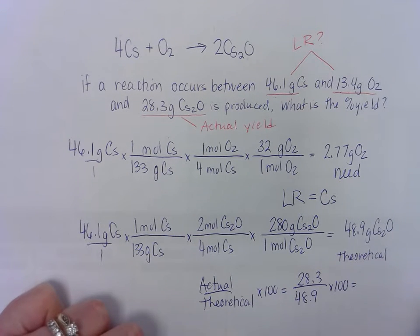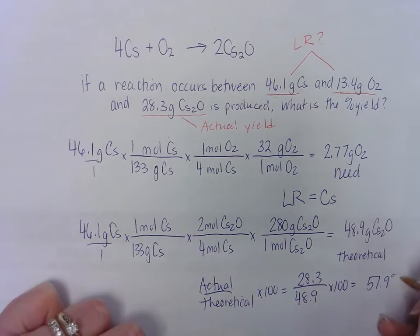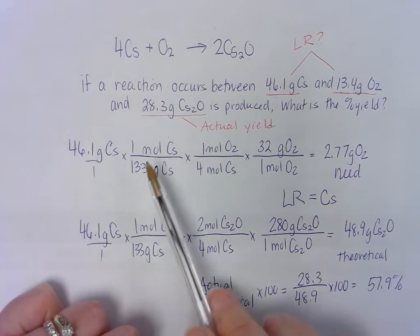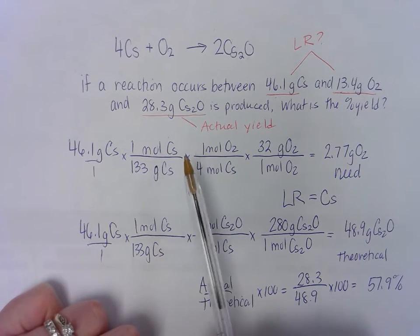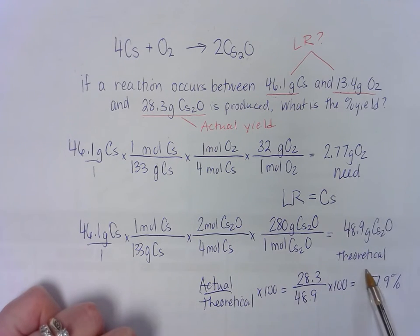And when we calculate that out, we get a percent yield of 57.9%. So this one was a little more complex because they gave us three numbers. And so we first have to decide the limiting reactant to know which of those two reactants to then convert to find our percent yield.